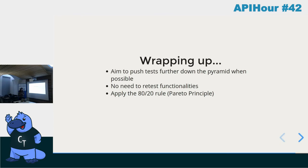A few tips before I end. First, aim to push tests further down the pyramid when possible — if a test can be covered by a unit test, do so. There's no need to test the same functionality at multiple levels. For example, if you've tested email validation in a unit test, there's no need to test it again in end-to-end tests. If end-to-end tests fail for something already passing in unit tests, that's probably a code smell.